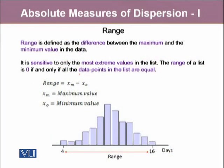Let's talk about the first measure of dispersion, which is range. Range is defined as the difference between the maximum and the minimum value in the data. Range is very sensitive to only the most extreme values in the list. Range of a list is zero if and only if all the data points are equal. Range is generally denoted as XM minus X0, where XM denotes the maximum value and X0 denotes the minimum value.